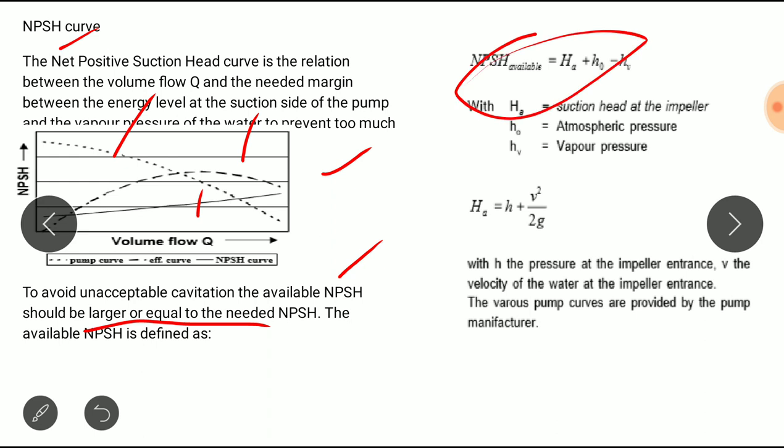NPSH is the suction head at the impeller entrance, and that is pressure at the impeller entrance plus v squared by 2g. H_a = δ_s + v²/2g, with δ_s the geometrical height at the impeller entrance, v the velocity of the water at the impeller entrance. The various pump curves are provided by the pump manufacturer.